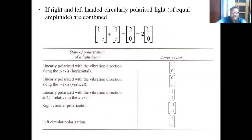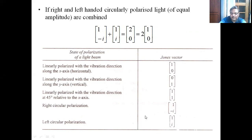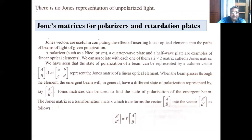To summarize the Jones vectors: linearly polarized light with horizontal vibration axis is [1, 0]; for vertical it is [0, 1]; for 45-degree vibration direction it is (1/√2)[1, 1]; for right circular polarization it is (1/√2)[1, −i]; for left circular polarization it is (1/√2)[1, +i]. There are no Jones matrices for unpolarized light.